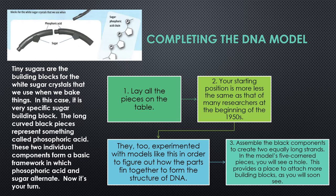Tiny sugars are the building blocks for the white sugar crystals that we use when we bake. In this case, it is a very specific sugar building block. And basically, we're just going to assemble the black components to create two equally long strands. And then we use the five corner pieces and connect them as a whole.